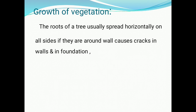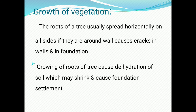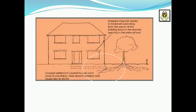Growth of vegetation: the roots of a tree usually spread horizontally on all sides. If they are around a wall, they cause cracks in the wall and foundation. Growing roots cause dehydration of soil, which may shrink and cause foundation settlement. In the circular portion of the example, roots are growing and causing unequal settlement near the building, as roots absorb moisture and cause clay to shrink.